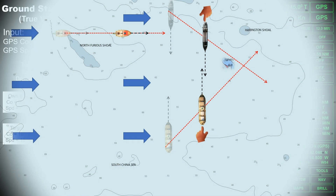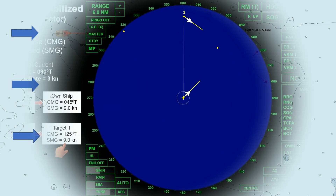But in our scenario, it is clear that we are in a head-on situation based on the aspects of both vessels. In collision regulations, we take action based on the aspect, or how we see other vessels, not through their movement. Looking at the radar display, both vessels show a vector indicating a crossing situation, which is incorrect. This is the reason why the ground stabilized mode is not recommended to be used in collision avoidance.